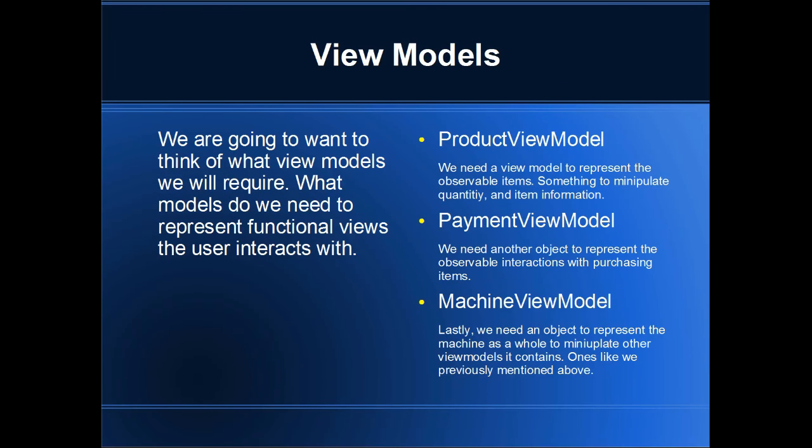We're going to want to think about what view models we will require — what models do we need to represent functional views the user interacts with? One of these is going to be a product view model, and we need a view model to represent the observable items, something to manipulate quantity and item information.